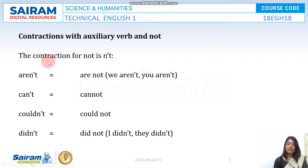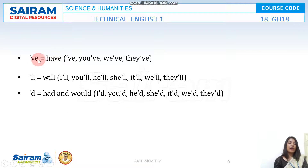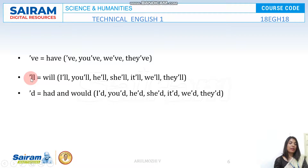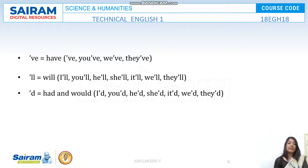'Have' can be contracted as apostrophe VE — 'we have' becomes 'we've,' 'you have' becomes 'you've,' 'they have' becomes 'they've.' 'Will' can be contracted as apostrophe LL — 'I will' becomes 'I'll,' 'you will' becomes 'you'll,' 'they will' becomes 'they'll,' 'she will' becomes 'she'll,' 'it will' becomes 'it'll.' 'Had' and 'would' can both be contracted as apostrophe D — it will be pronounced as ID or YUD, for example 'she'd,' 'it'd.'